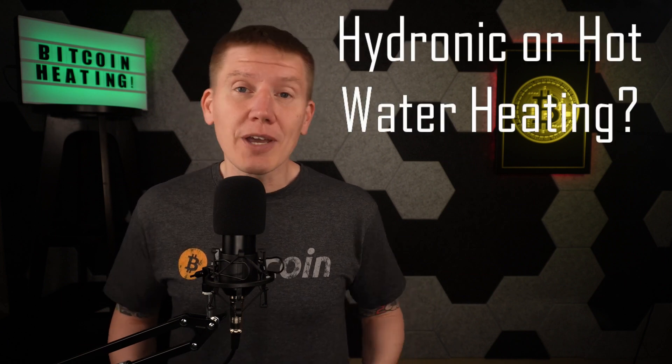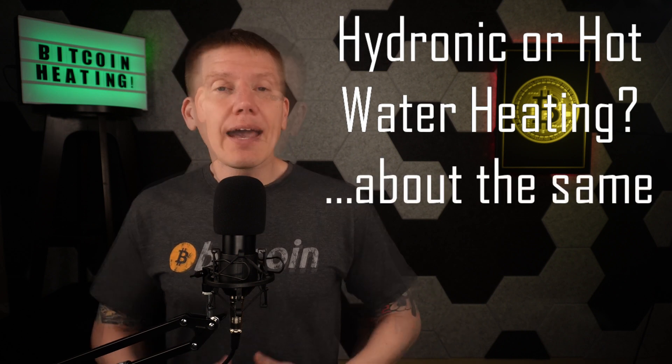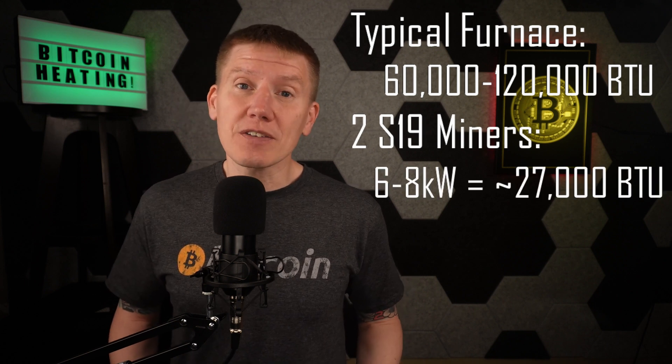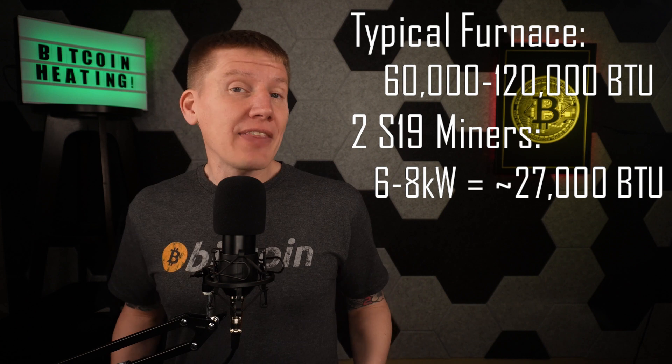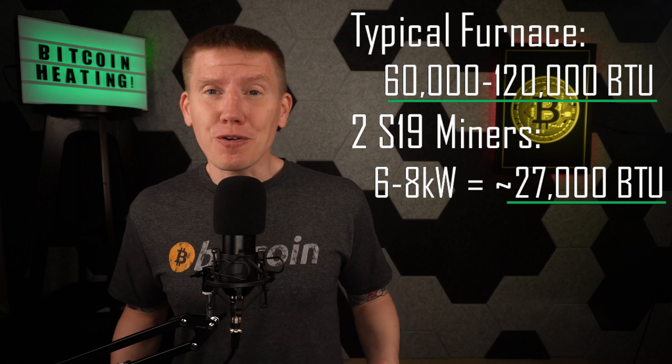If your house is currently heated by a hydronic or hot water system, your Bitcoin home heating will likely be very similar to what you experience now. However, if your house is currently heated by a forced air system, things are going to be a little different. A typical forced air furnace size is somewhere in the range of 60,000 to 120,000 BTU. In contrast, a home Bitcoin immersion mining system running two S19 miners would generate 6 to 8 kilowatts of heat, depending on overclocking, and that is equivalent to roughly 27,000 BTU — which is a lot less than a typical furnace.